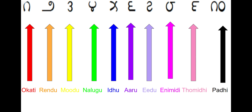The next language is Telugu. The first one is Okati. Next is Randu. Then Moodu. Nalugu. Aidu. Aadu. Aadu. Enimidi. Tommidi. Padi.